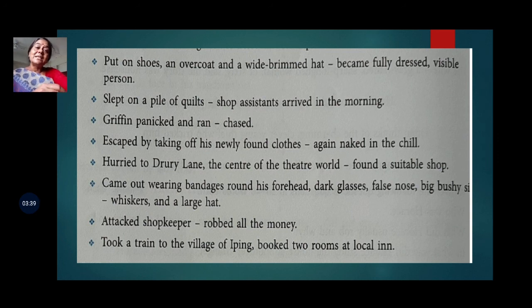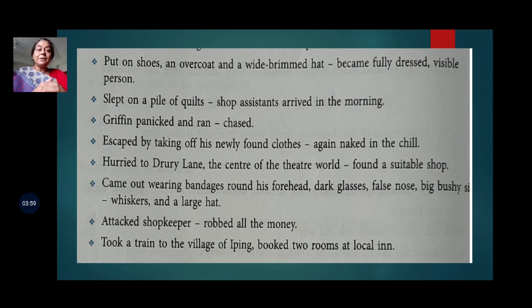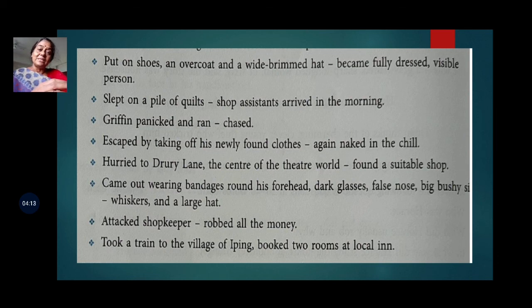He hurried to Drury Lane, the center of the theater world, and found a suitable shop selling theater costumes. He went inside, slapped the shopkeeper, and came out wearing bandages around his forehead, dark glasses, a false nose, bushy whiskers, and a large hat, completely changing his appearance. He then attacked the shopkeeper, robbed all the money, and took a train to Iping, booking two rooms at the local inn.